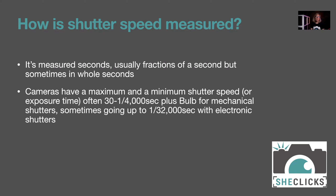In Bulb mode, when you press the shutter release and keep your finger on it, the shutter stays open for the entire time your finger is there and you use your watch to time how long you want the exposure. Of course pressing the button isn't ideal as you'll wobble the camera, so you can use a remote release to open the shutter, lock it open, time your exposure, and then close it off.